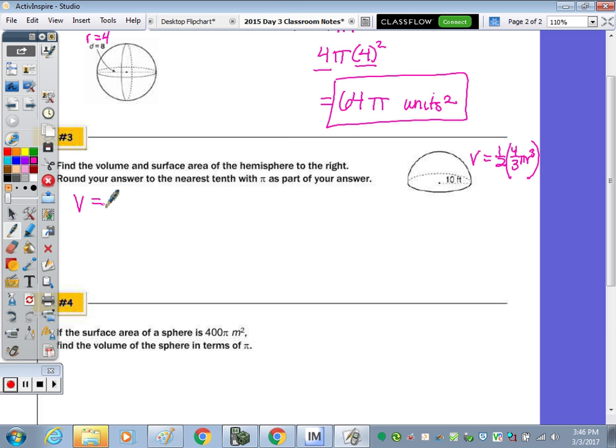So the volume is going to be 2/3πr³, a radius of ten cubed. Now 10³ is 1000. And 2/3 of 1000 is going to be 666 and 2/3, or 666 repeating. Now it wants it to the nearest tenth with pi as part of our answer. So rounding to the nearest tenth, our volume is approximately 666.7π cubic feet.